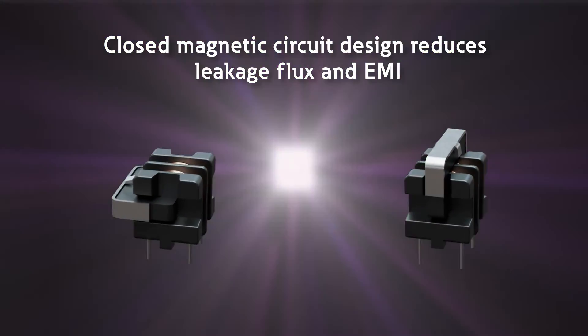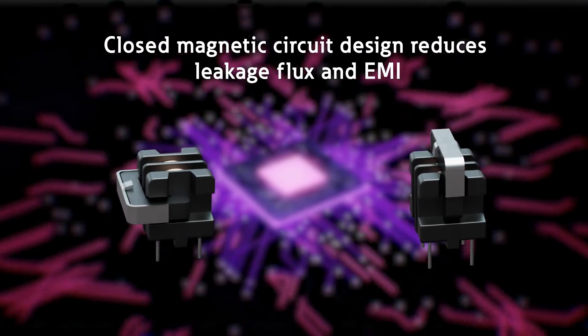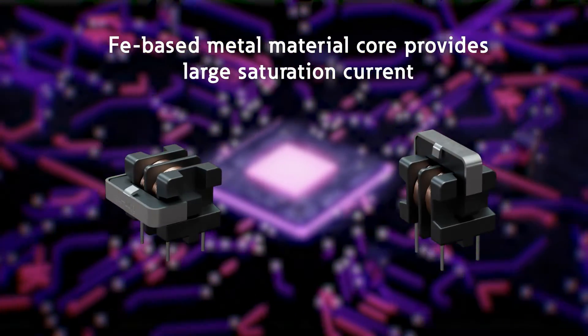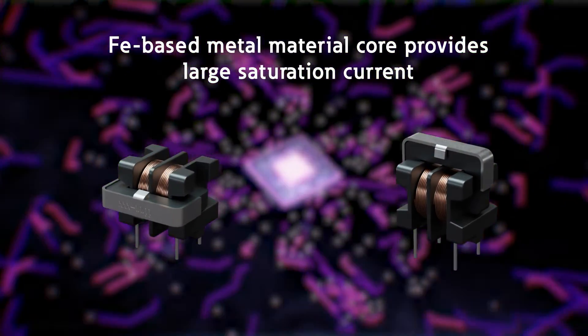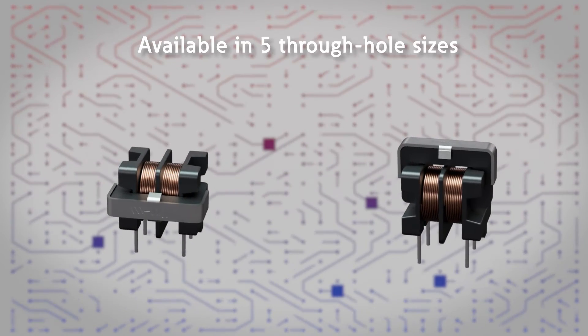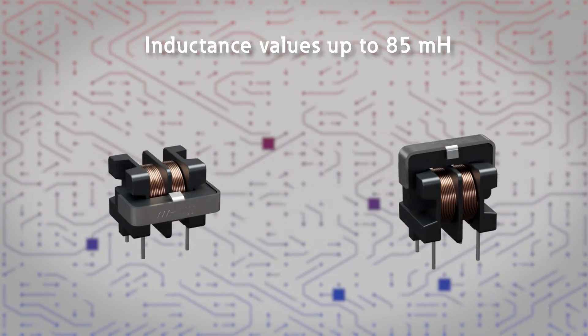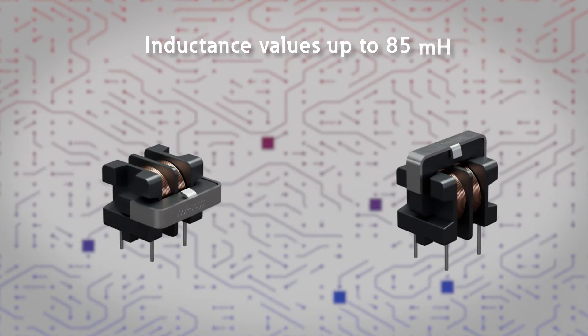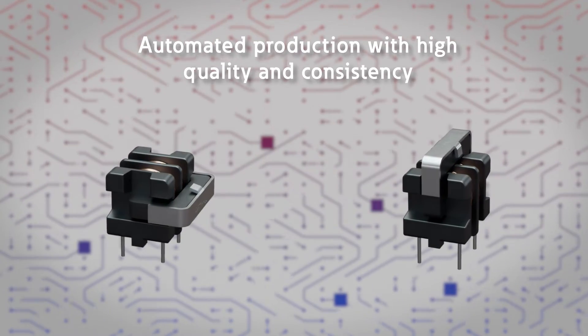A closed magnetic circuit reduces leakage flux and EMI while the iron-based core provides a large saturation current. The ECMTs come in five through-hole sizes, offer inductance values up to 85 millihenries, and enable automated production with tray packaging.